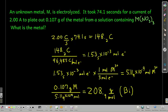Let's do an example. Let's say we have an unknown metal and it's being electrolyzed in an electrolytic cell. It takes us 74.1 seconds with a current of 2.00 amps. When we do that, we plate out 0.107 grams of the metal in a solution. We know we had in that solution the nitrate, and we know that it was 3 nitrates. Each nitrate has a negative 1 charge. So what we know is that that metal has a positive 3 charge on it when it's in ionic form. We want to know what the metal is.